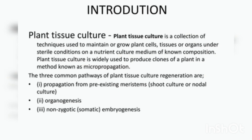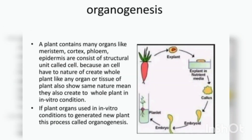There are three common pathways of plant tissue culture: propagation from pre-existing meristems, which are seen in shoot or nodal culture; next is organogenesis; and the third one is somatic embryogenesis.